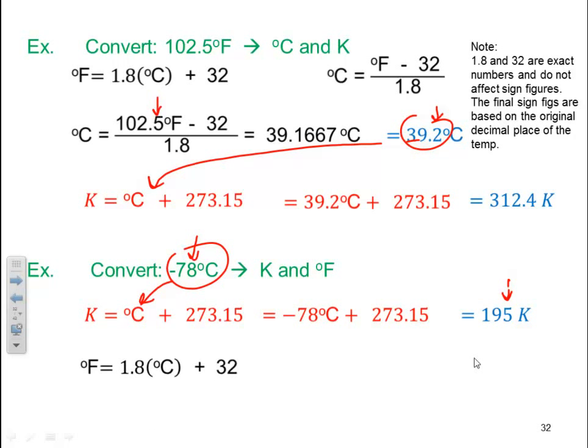Now we'll take and do our Fahrenheit. So I have to plug in my negative 78 degrees C into my equation. It gets me 1.8 times negative 78 degrees C plus 32. It gets me negative 108 degrees Fahrenheit once again to the ones place.